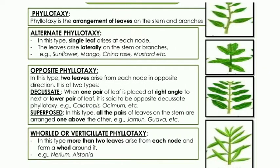Phyllotaxy is the arrangement of leaves on the stem and branches. There are three basic types: alternate phyllotaxy, opposite phyllotaxy, and whorled phyllotaxy. In alternate phyllotaxy, a single leaf arises at each node — one leaf on the left side, the next on the right side, arising laterally on the stem.